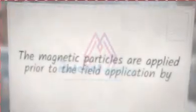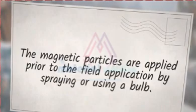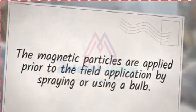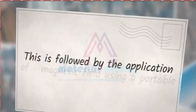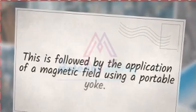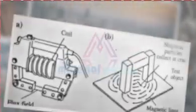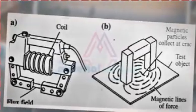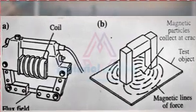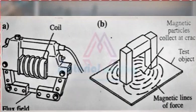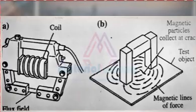The magnetic particles are applied prior to the field application by spraying or using a bottle. This is followed by the application of a magnetic field using a portable yoke. In a magnetic yoke device, the two poles of an electromagnet are attached in a systematic arrangement where the circuit is completed once both the poles touch the workpiece.